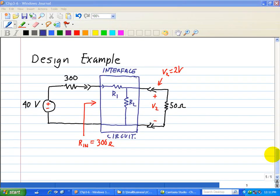We're asked to design the interface circuit in this figure so that the 40-volt source delivers 2 volts at the output port of the interface circuit or delivered to the load. That is, we have a constraint at the output port such that V2 is equal to 2 volts.